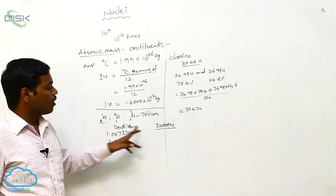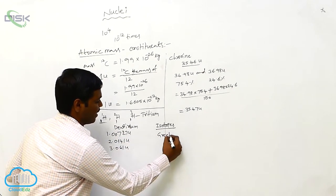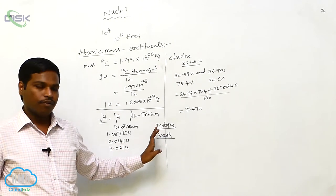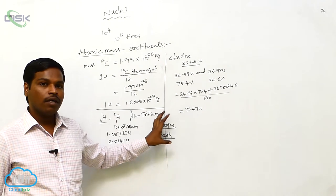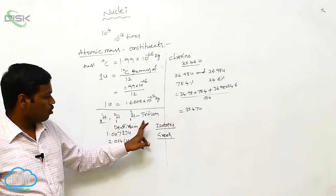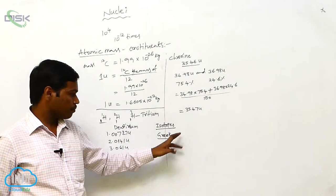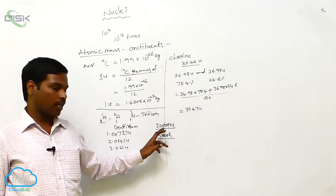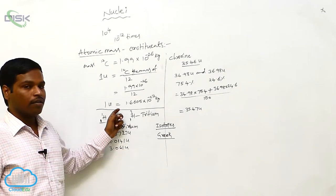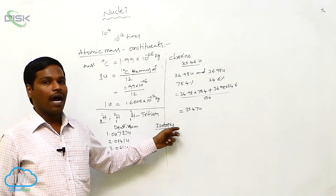These hydrogen variants are hydrogen isotopes. The word 'isotope' comes from the Greek language, meaning 'same location' — isotopes occupy the same location in the periodic table. Isotopes are elements which have the same atomic number but differ in their masses.